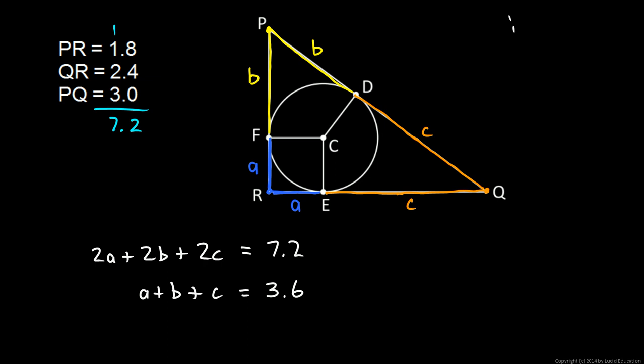And now I can just do a little bit of a clever substitution here. Watch this. A is right here, B is right here, and this side, PR, is 1.8. So I know that B has to be 1.8 minus A. You see that? This whole side right here is 1.8.